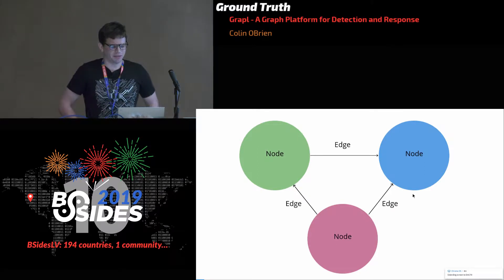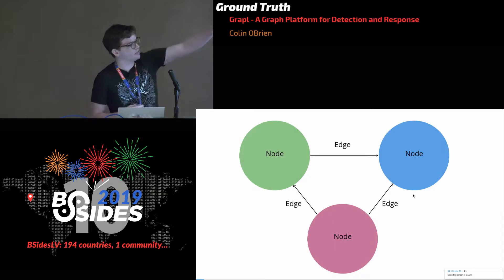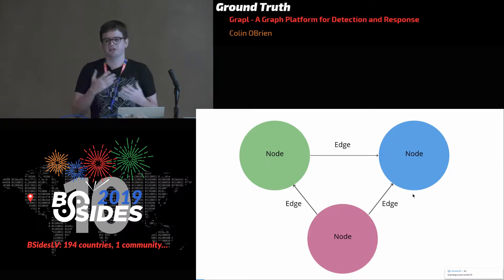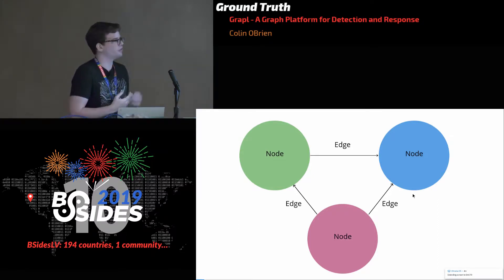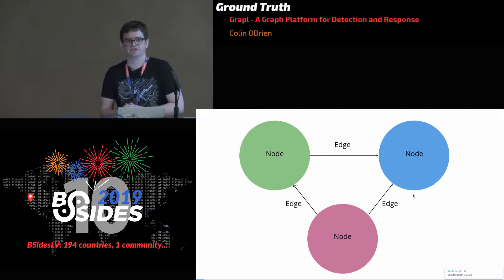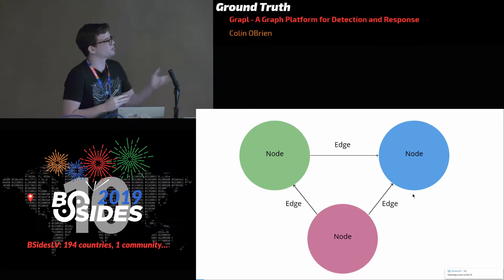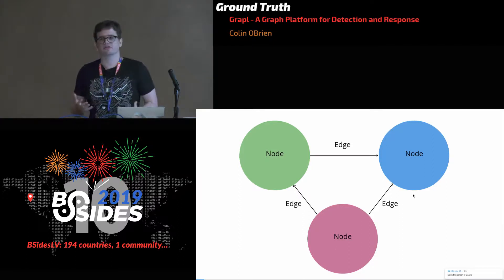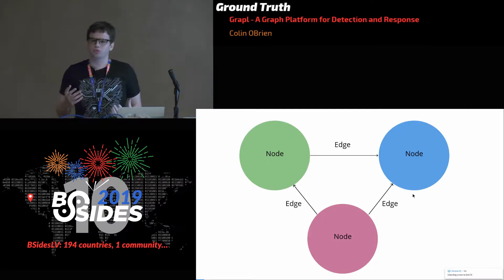Nodes are entities or things — nouns. You could imagine a person maps very nicely to a node. Edges are those lines in between them — they denote relationships between nodes. As an example, you might have two person nodes and an edge between them because they are friends. Graphs are a really powerful data structure. Even with a very plain graph with no explicit labels, I can say a lot of interesting things — like the purple node has a relationship with the green and the blue node, and the green node has a relationship with the blue node.